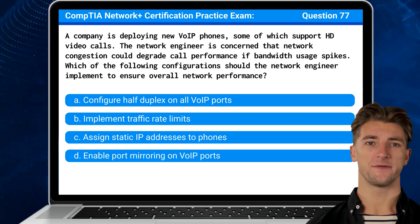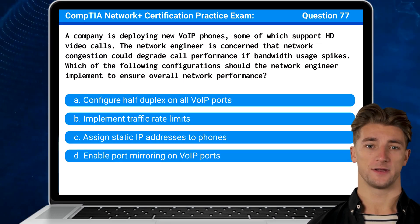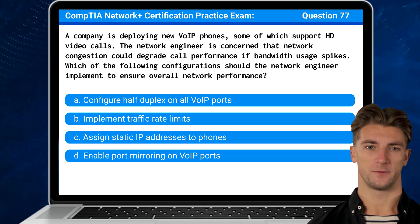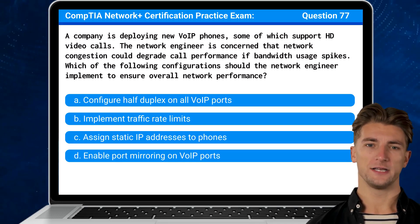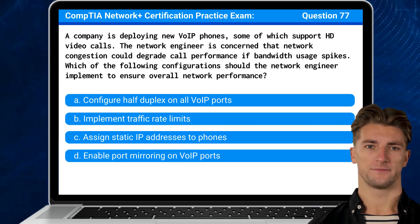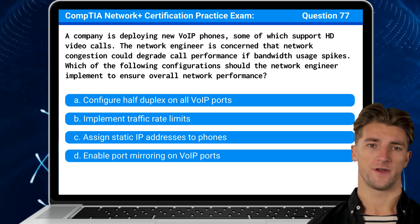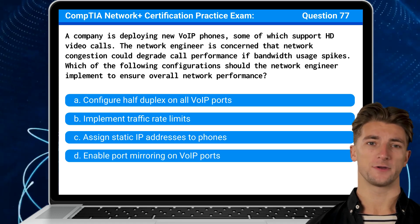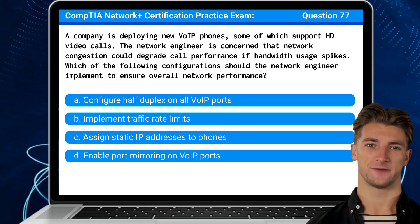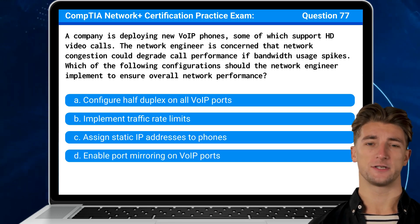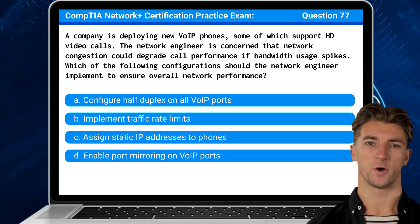Question 77: A company is deploying new voice over IP phones, some of which support HD video calls. The network engineer is concerned that network congestion could degrade call performance if bandwidth usage spikes. Which of the following configurations should the network engineer implement to ensure overall network performance?